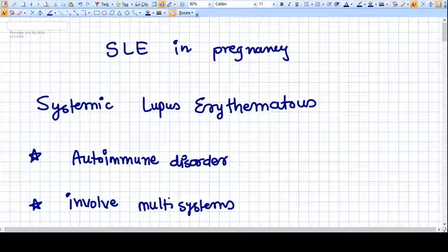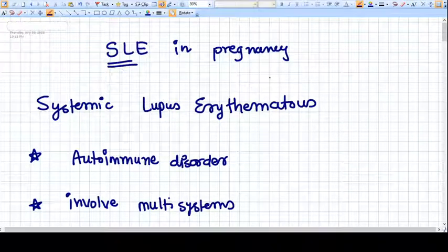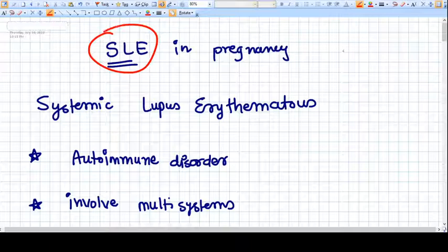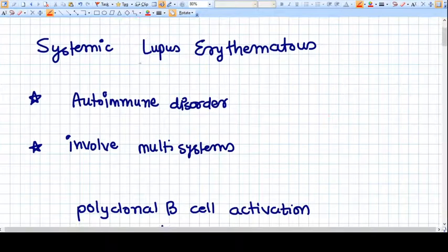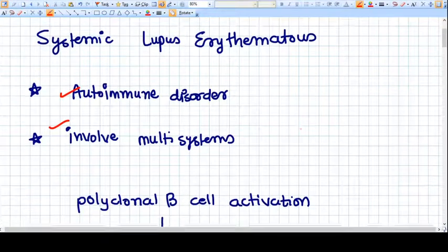Hey everyone, today we have a topic of autoimmune disorder in pregnancy, that is systemic lupus erythematosus. This itself in pregnancy complicates with preeclampsia. SLE is an autoimmune disorder that involves multi-systems - respiratory system, cardiovascular system, central nervous system, everything.